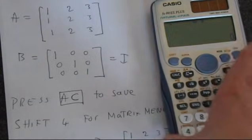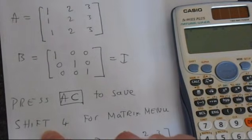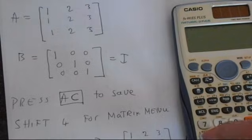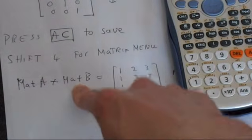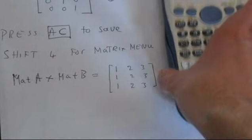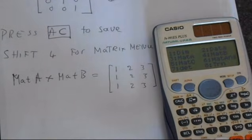Now we need to go back into the matrix menu. So we press shift 4. Now we want to do matrix A times matrix B.